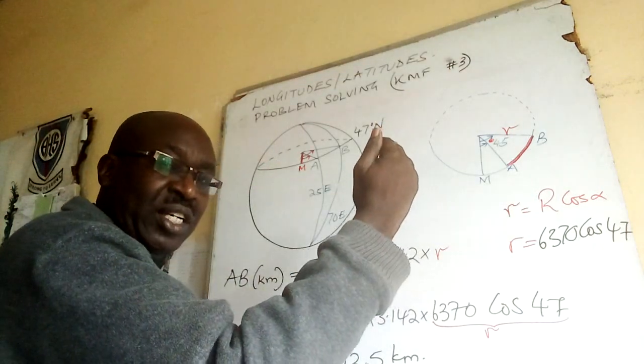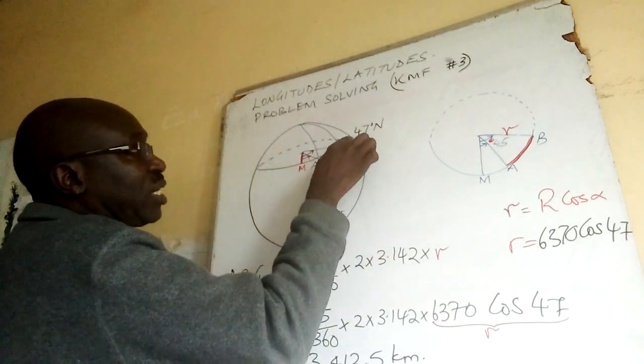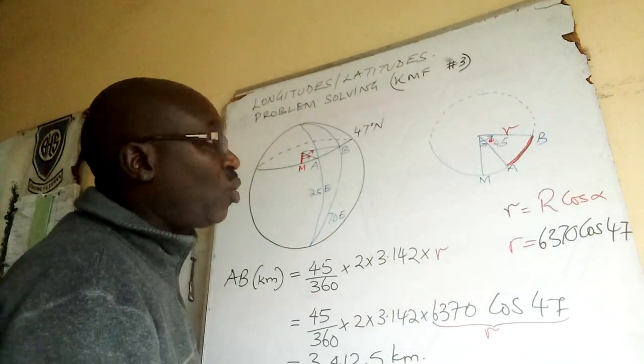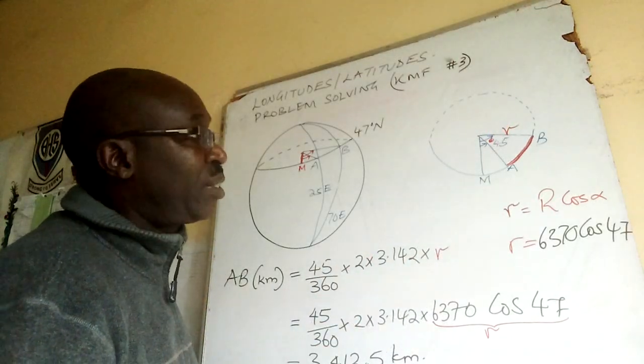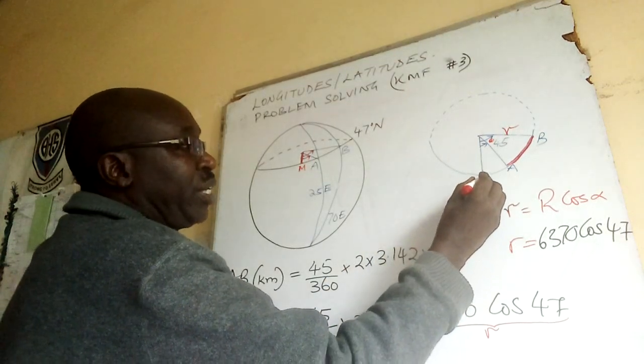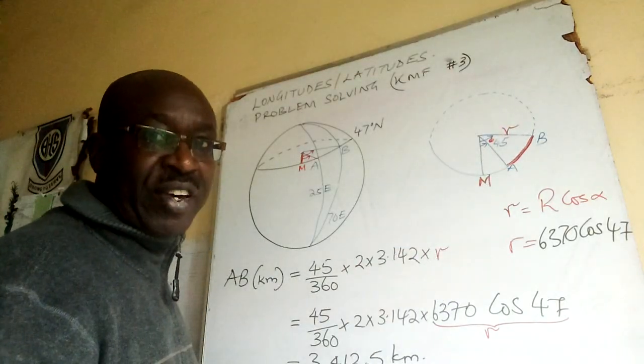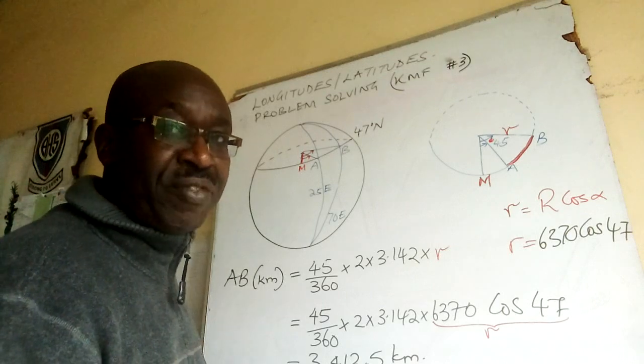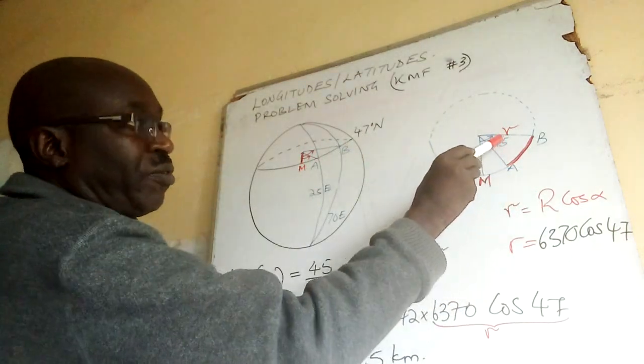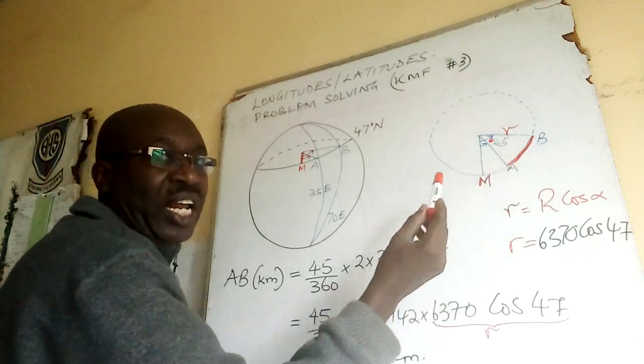From the same meridian I measure angle 70 towards right because it is east. When we extract the latitude here now, this is a small circle whose radius is small r. You can see there is a meridian here. Measure 25, and from meridian measure 70. Longitude difference is 70 minus 25 which is 45. So this is the angle that is responsible for this arc length AB.